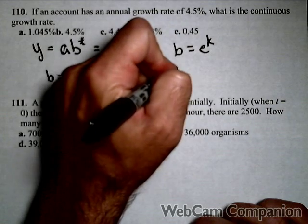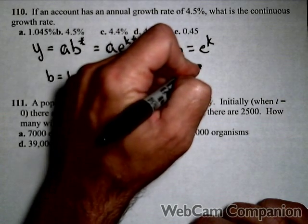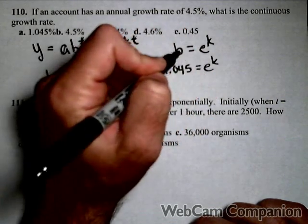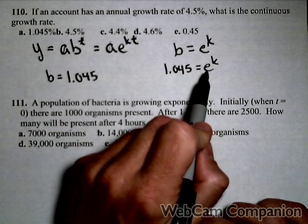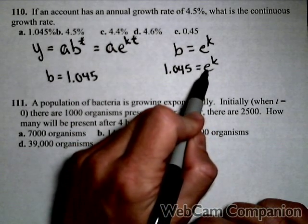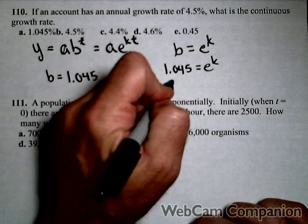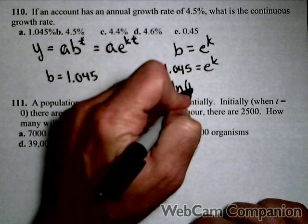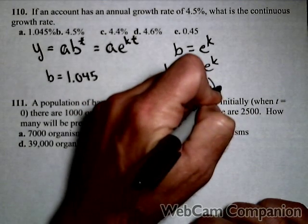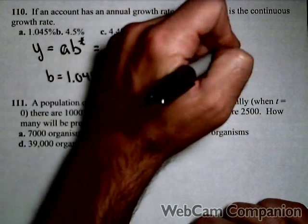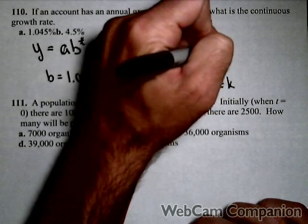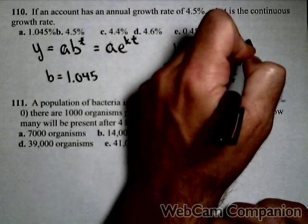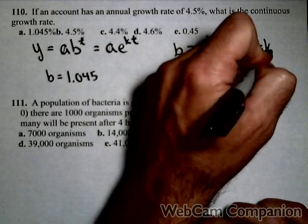So we have 1.045 equals E to the K. Well we can rewrite this as a logarithm, and in fact we'll use natural log because of the E. So natural log, which is base E, of 1.045 equals K. That's always the case. This rewritten is always going to be ln of B equals K.